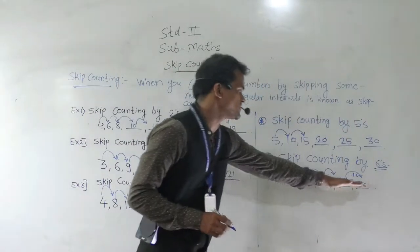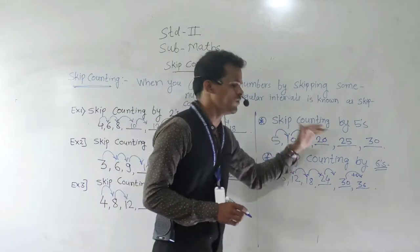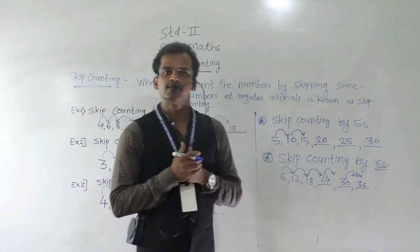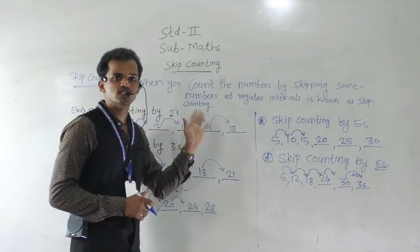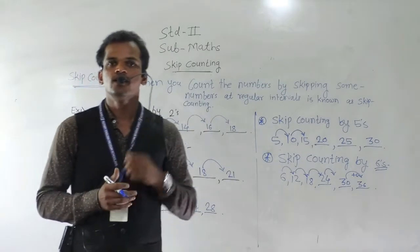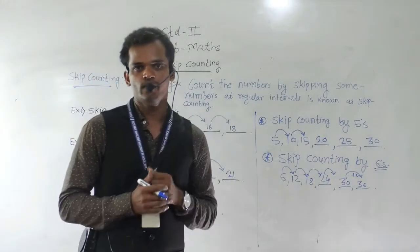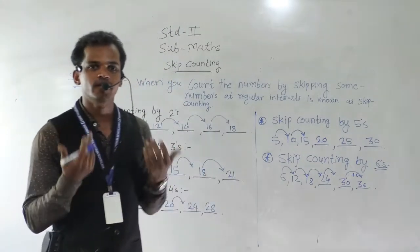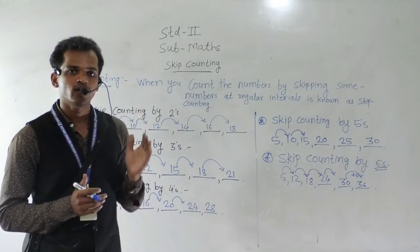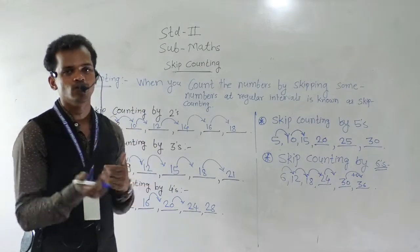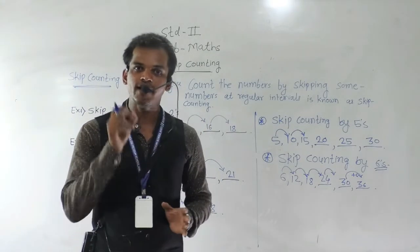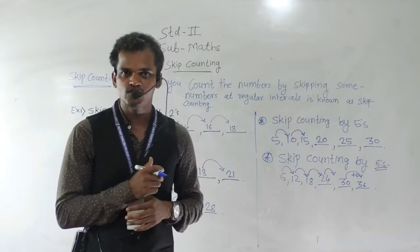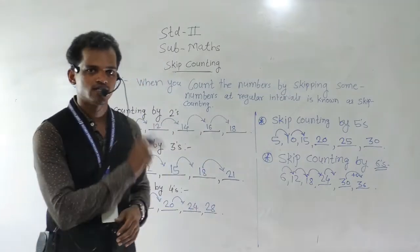This is the example of skip counting by 6. So, what have we done today? Skip counting. What is the meaning of skip counting? When we count the number by skipping some numbers at regular intervals, it is known as skip counting.